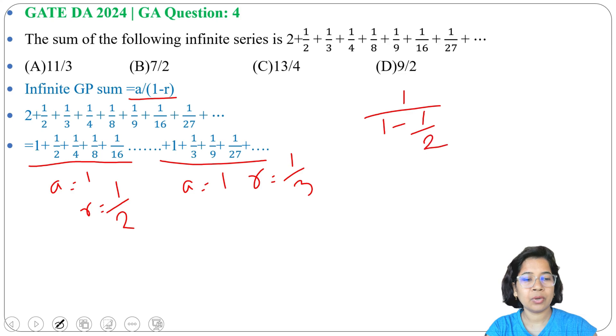1 minus 1 by 2 is 1 by 2, so it will be 1 divided by 1 by 2, plus 1 divided by 2 by 3. This becomes 2 plus 3 by 2.